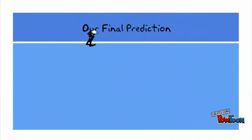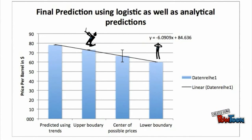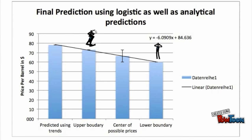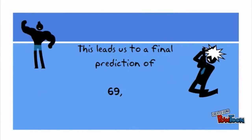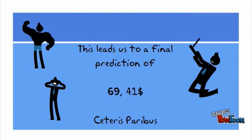So our final prediction: to get our final prediction, we plotted all the points into a bar chart and drew a line of best fit through these points. We then plugged the middle value of 2.5 into the equation of our line of best fit, which ultimately gave us the result of $69.41, though ceteris paribus.